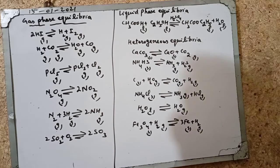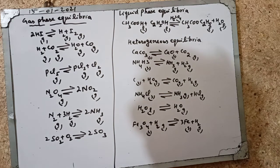In the presence of acid catalyst, CH3COOC2H5 ethyl acetate ester is formed plus water. These are all in liquid phase, this is the example of liquid phase equilibria. Heterogeneous equilibria or solid phase equilibria.